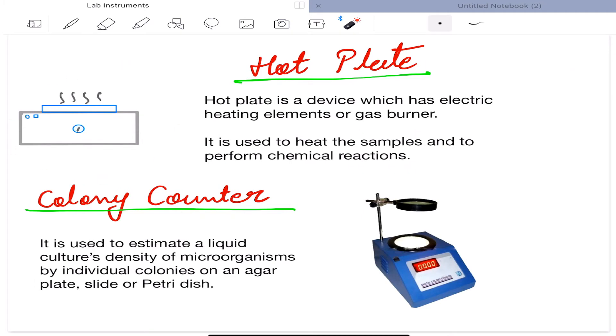Next is hot plate. Hot plate is a device which has electric heating elements or a gas burner. It is used to heat the samples and to perform chemical reactions. Next is colony counter. It is used to estimate the liquid culture's density of microorganisms by individual colonies on an agar plate, slide, or petri dish.